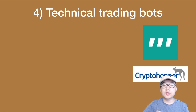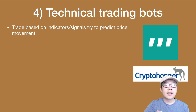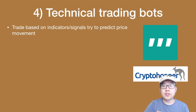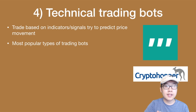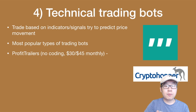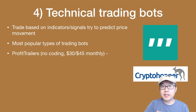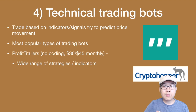Number four is technical trading bots. These place trades based on indicators or signals, trying to predict future price movement, and are the most popular type of trading bots. One very popular one is called Profit Trailers — no coding required, with different tiers at $30 or $45 a month. They have a wide range of strategies and indicators that you can follow or utilize.